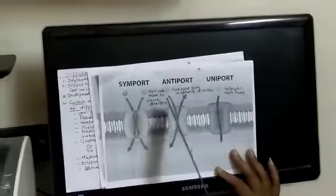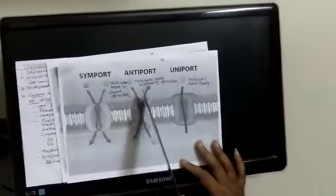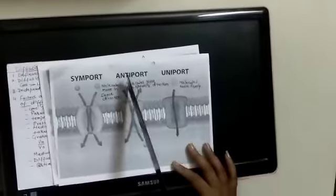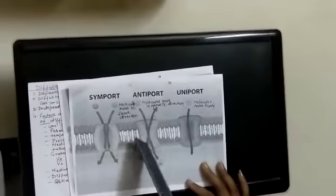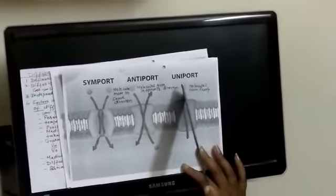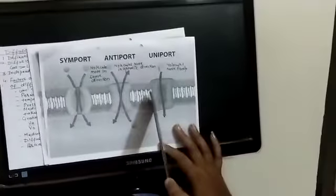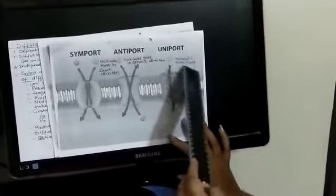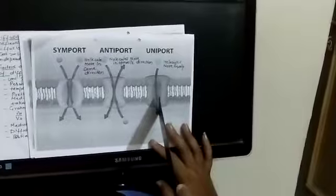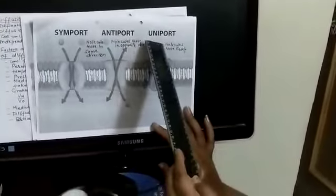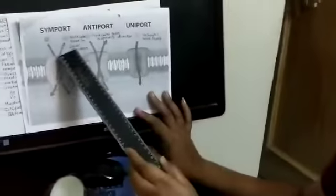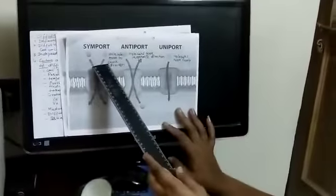So when the molecules move in opposite direction, then it is known as anti, means opposite, antiport. You can see this, antiport. Then third is there are channels or proteins in which the molecules move freely. The molecules freely move. This is called uniport.